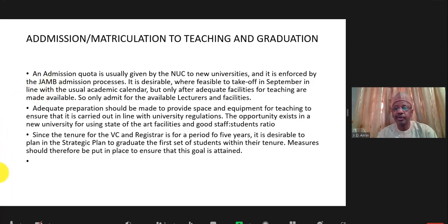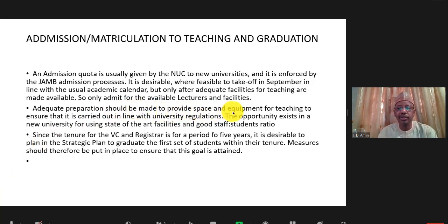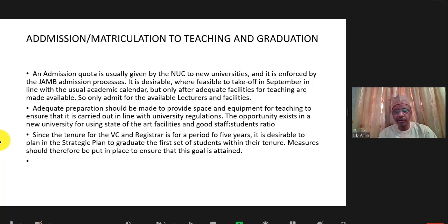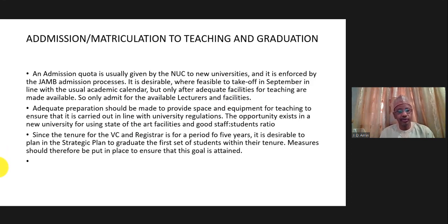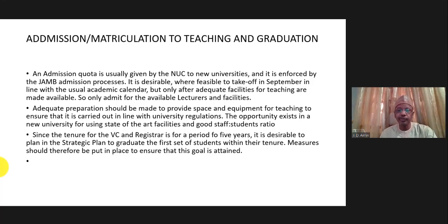Students register through accepted procedure. Adequate preparation must be made to ensure students have the facilities they need. Since it's a new university, you only admit for the number of students you can cater for — no need to put yourself under pressure to over-admit. You must take cognizance of the facilities you have before setting your admission quota, and the NUC and JAMB will also come in to approve whatever quota you think is good for your university.